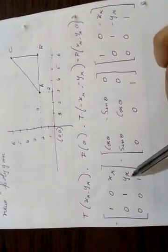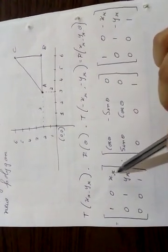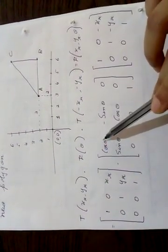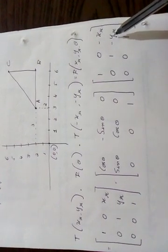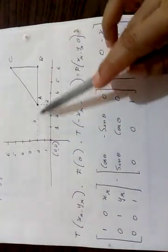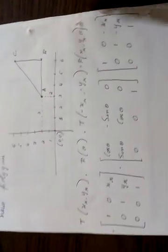The matrix for translation uses xr and yr as the pivot point coordinates. The rotation matrix is: [cos θ, -sin θ, 0; sin θ, cos θ, 0; 0, 0, 1]. The inverse translation matrix uses -xr and -yr, meaning you perform the inverse of translation. Now let us substitute all these values.